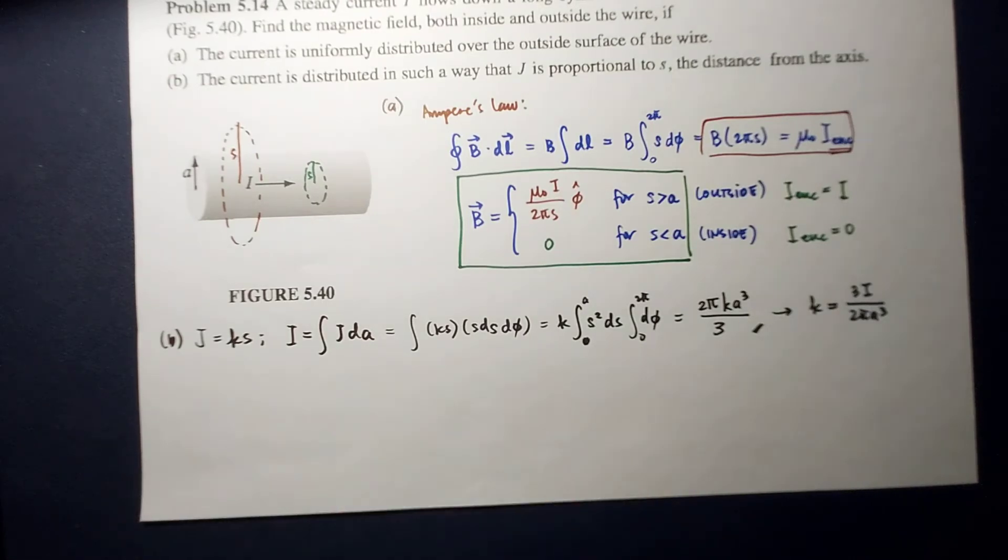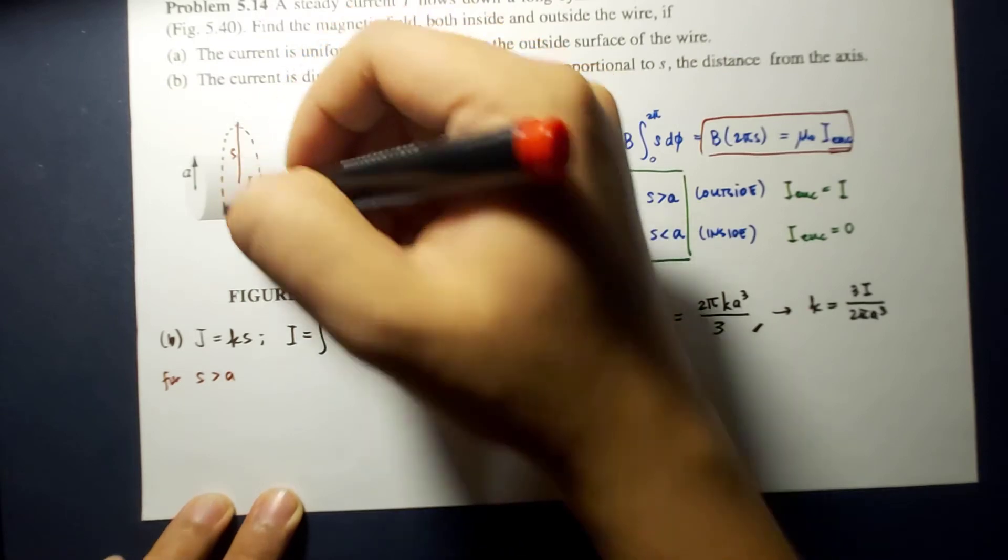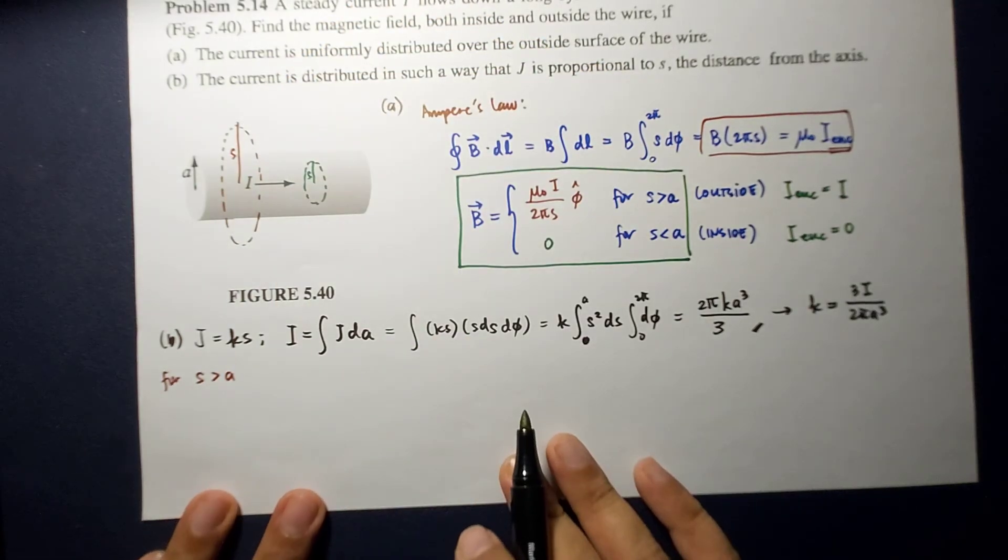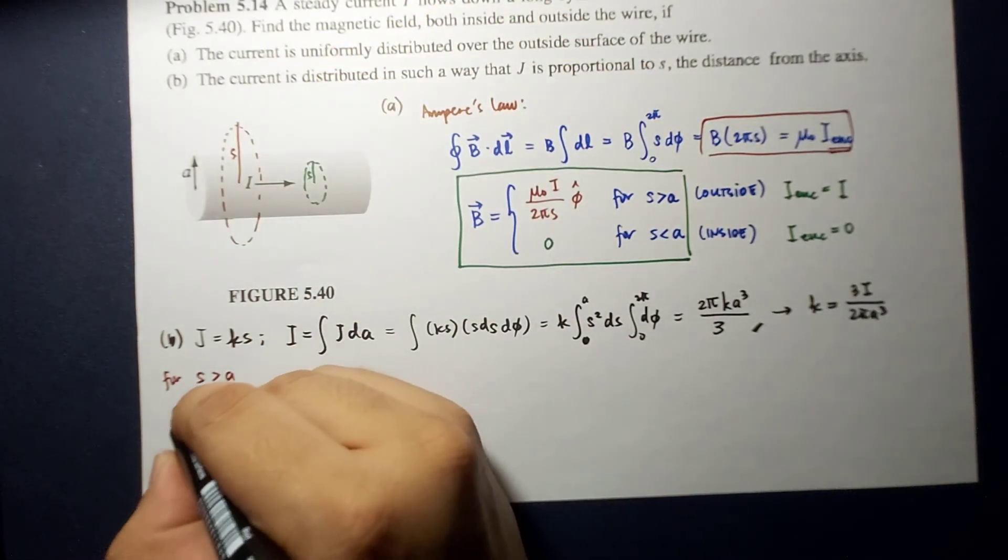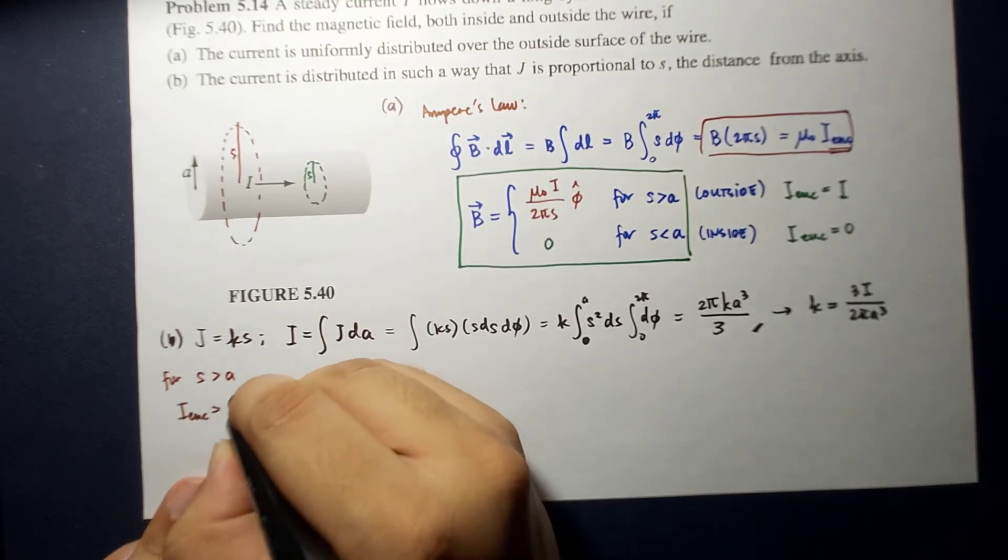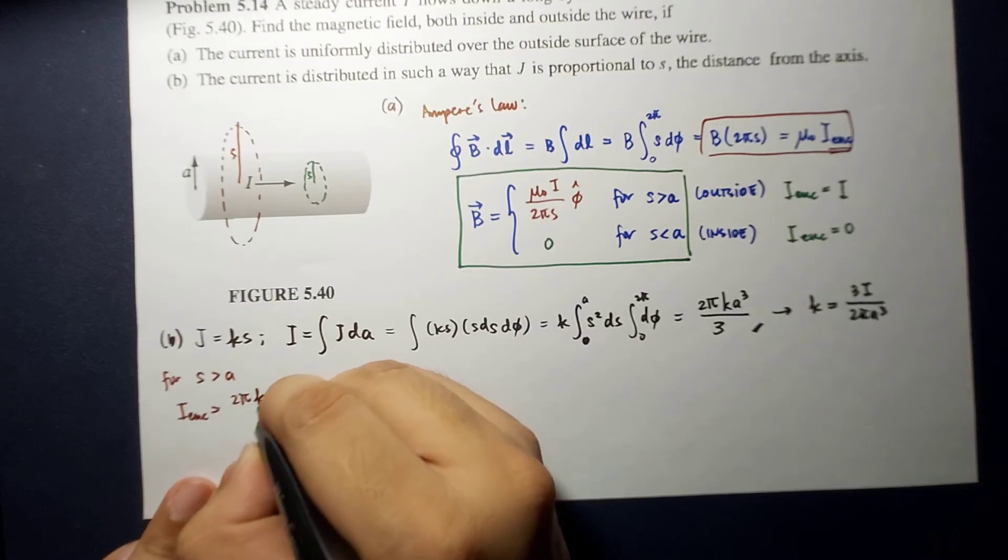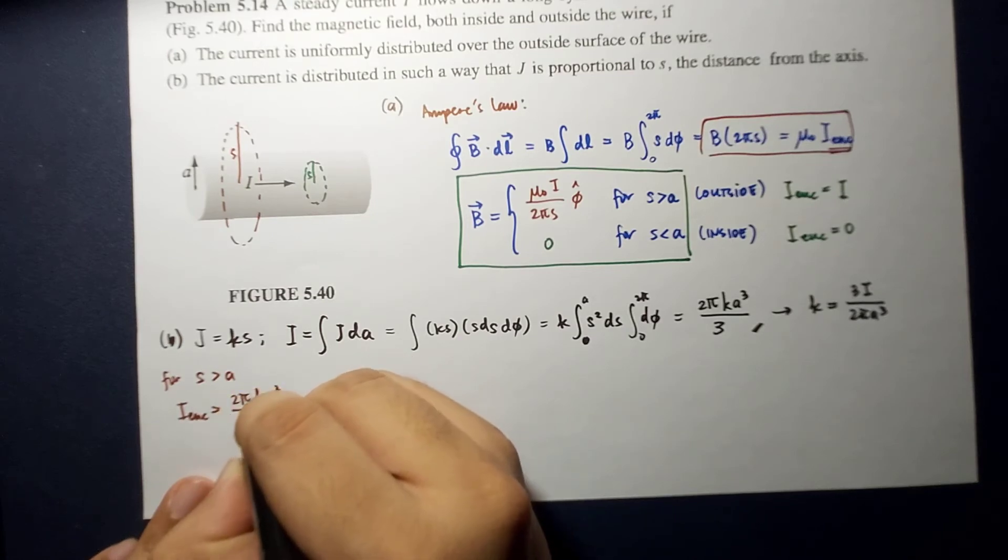So, for A, for S greater than A. So, for S greater than A outside. Okay? So, you will notice that this amperian loop covers the whole current. So, that means the I enclosed would be equal to